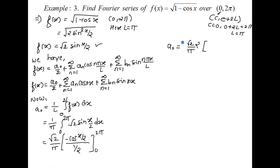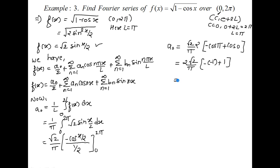Applying the upper limit x = 2π: the 2s cancel, leaving -cos(π). For the lower limit x = 0: that gives -(-cos 0) = +cos 0. So A0 = (2√2/π)[−cos π + cos 0]. cos π = −1, so −(−1) = 1, plus cos 0 = 1, giving 1+1 = 2. Therefore A0 = 4√2/π.